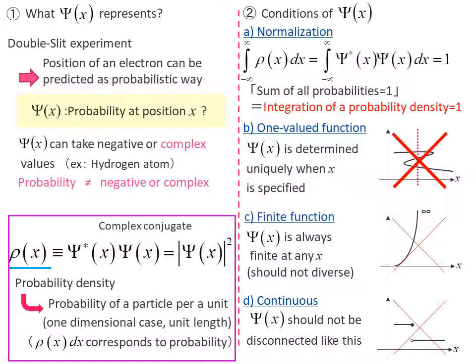The third is that it should be a finite function. Because probability should also be finite, Ψ(x) itself must be finite without diverging in this way.